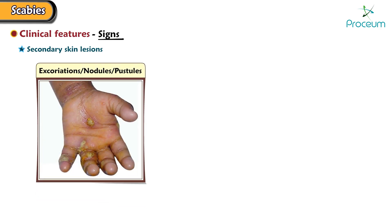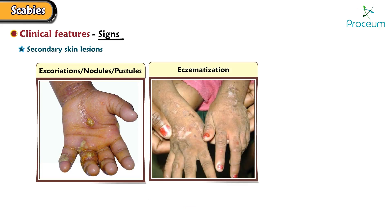Secondary skin lesions are manifested as excoriations, nodules, pustules, and eczematization.